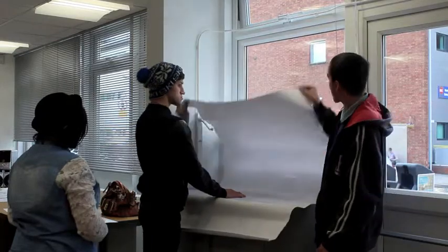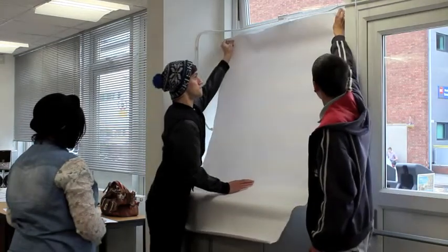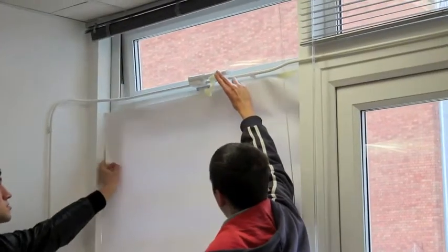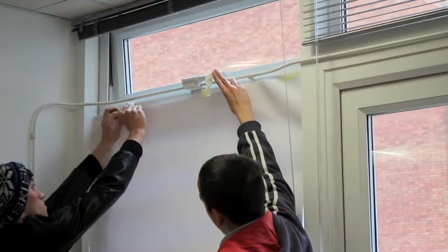We used paper so it blocked out all the background image so we could get a clear image on the camera. It also allowed a small little bit of light through.